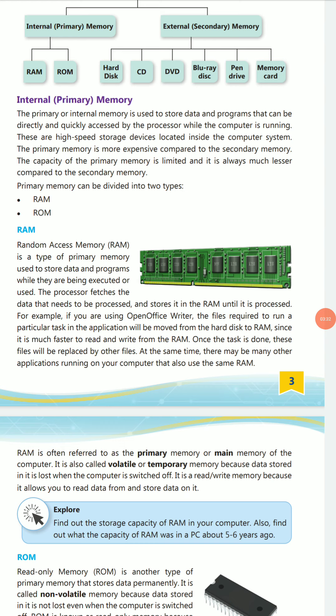Primary storage is more expensive compared to secondary memory. The capacity of primary memory is limited and always much less compared to secondary memory. RAM and ROM are forms of internal memory with limited capacity. You can upgrade it, but it comes with a unique and limited memory when purchased.